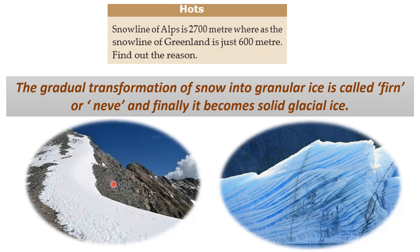Initially when snow starts to accumulate, it looks like fine powder. In course of time it changes into granules like sugar and salt crystals, and later they all bind together and become solid glacial ice.